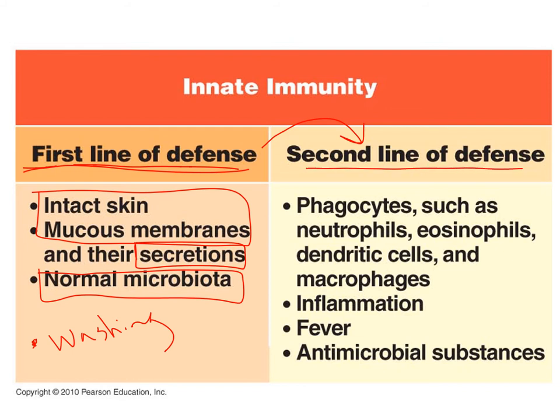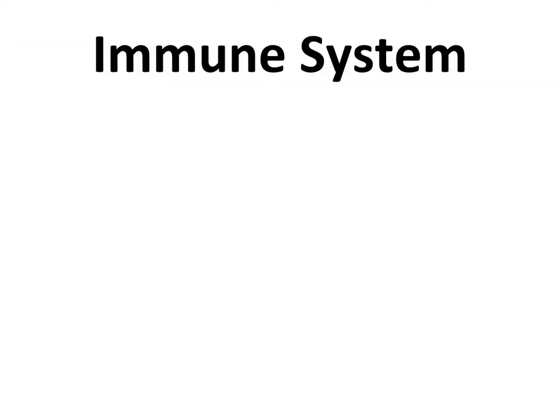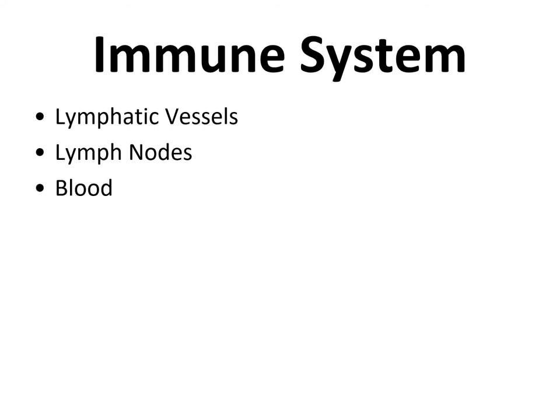Your second line of defense involves things that occur inside your tissues — different types of white blood cells and different responses occurring inside the body. To understand how the second line of defense functions, you need a good understanding of the different parts of the immune system. Those parts include lymphatic vessels and organs, lymph nodes, and the blood.